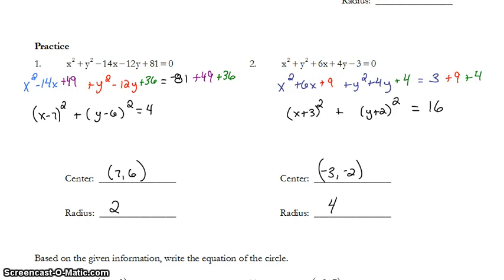And for our last one, we should find the center to be negative 3, negative 2, and the radius 4. If you didn't get either of those, please try to follow my work to see how I grouped, how I completed the square. Make sure you combined or you added to both sides. And again, if you have questions, make sure you ask me.